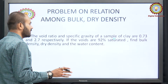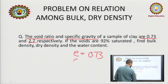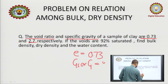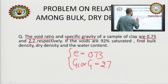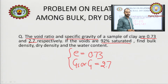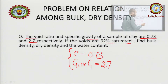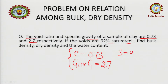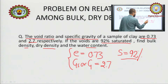The first problem is an easy one. First, understand what is being asked. The void ratio and specific gravity of a sample of clay are 0.73 and 2.7, respectively — so E = 0.73 and Gs = 2.7. If the voids are 92 percent saturated, this means the degree of saturation S = 92%. Find the bulk density, dry density, and water content — three things we have to find.